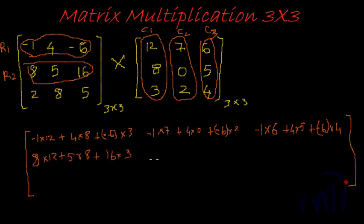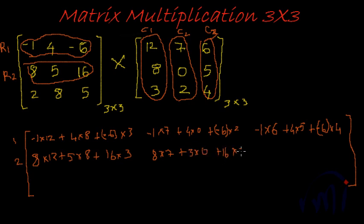The next element in row 2 — that is row 2, column 2 — would be the sum product of row 2 elements with column 2 elements. That would be 8 into 7, plus 5 into 0, plus 16 into 2. Similarly, the last element of row 2 is the sum product of row 2 with column 3: 8 into 6, plus 5 into 5, plus 16 into 4.